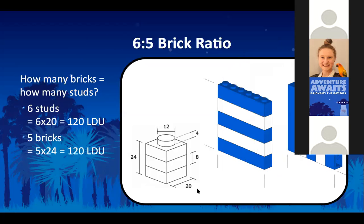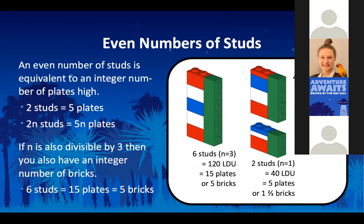The six-to-five ratio is a very similar situation, except now we're talking about only bricks. A six-stud brick is the same height as a stack of five bricks. You can do this not just for two or six, but for any even number — it'll always be an integer number of plates. It might not be an integer number of bricks unless it is divisible by both two and three — in other words, divisible by six.